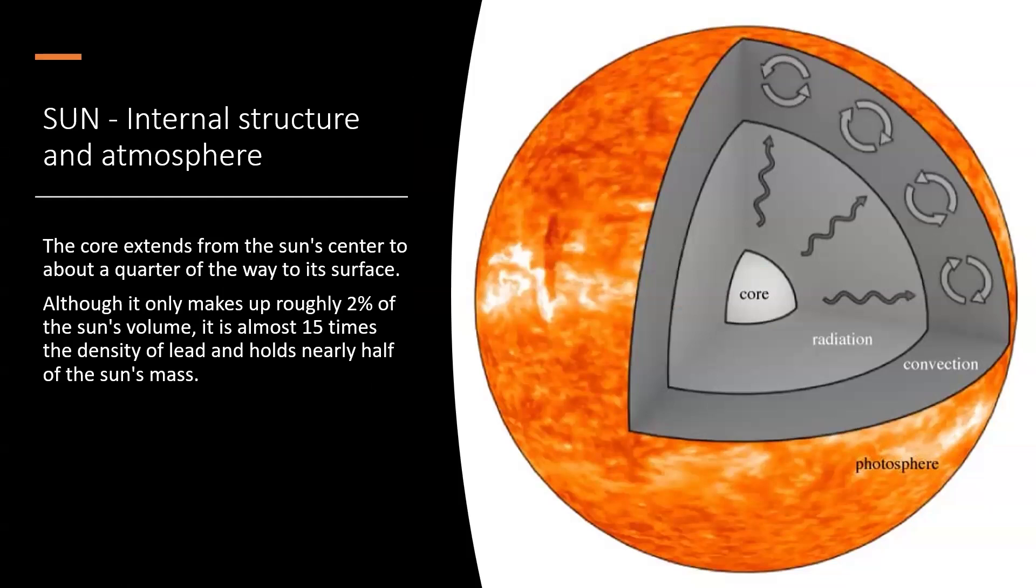The core itself extends from the Sun's center to about a quarter of the way to its surface. Although it only makes up roughly 2% of the Sun's volume, it is almost 15 times the density of lead and holds nearly half of the Sun's mass. So the core itself is only 2% the size of the Sun. However, it is very dense.